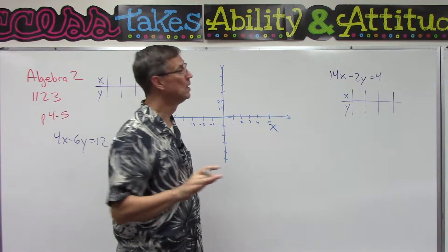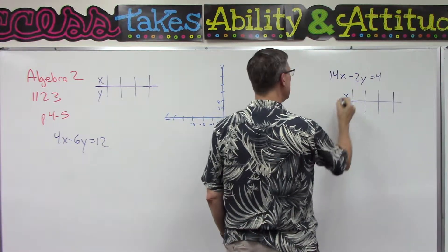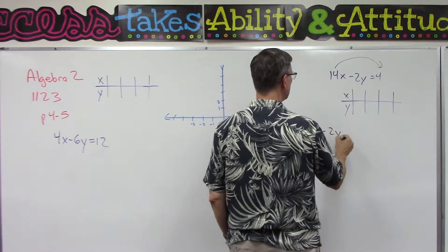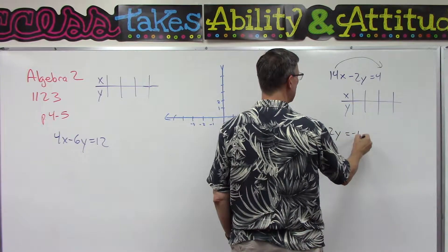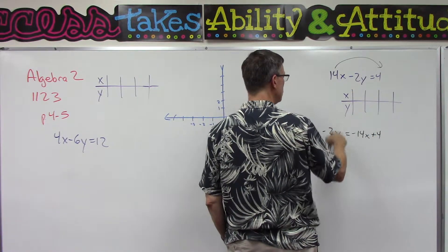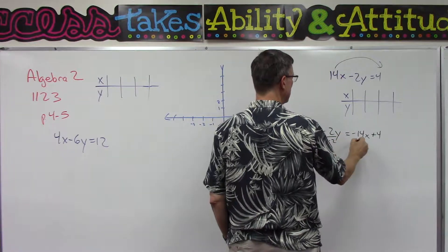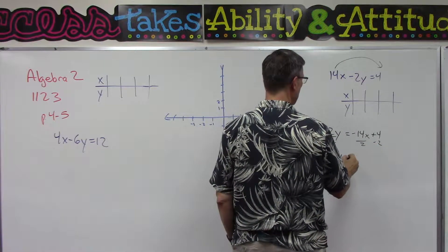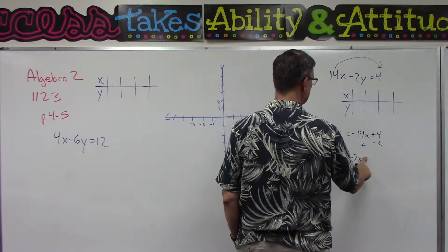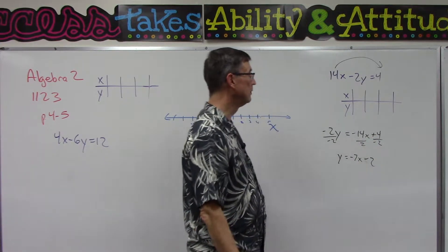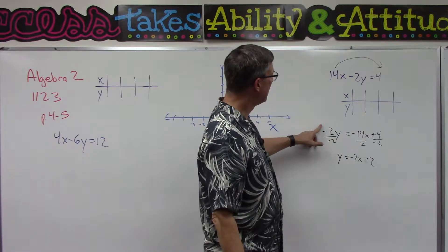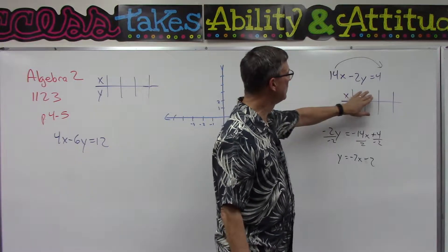Sometimes when you plug in x values you'll end up with fractions, and those are not fun to graph. So I'm going to teach you a method where you don't have to deal with fractions. Starting with this equation, I take 14x to the other side — remember, change sides change signs — so I get 2y equals, then I divide everything by negative 2, and I get y equals negative 7x minus 2, because 4 divided by negative 2 is negative 2. We solved for y.